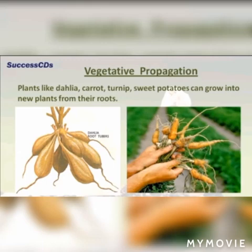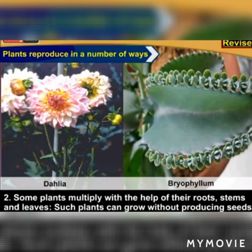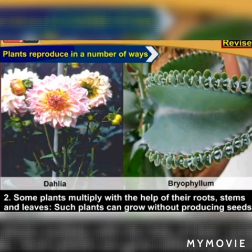The next method is from leaves. The leaves of certain plants like bryophyllum have small buds on their leaf margins, which grow into new plants once they fall on moist soil. Some plants multiply with the help of their roots, stems, and leaves, and such plants can grow without producing seeds.